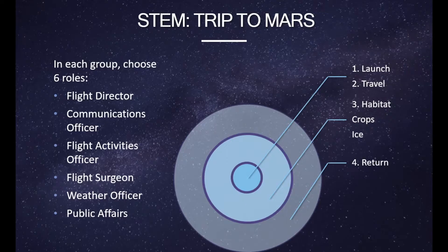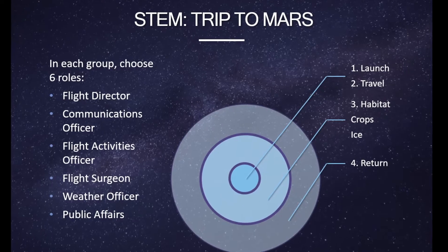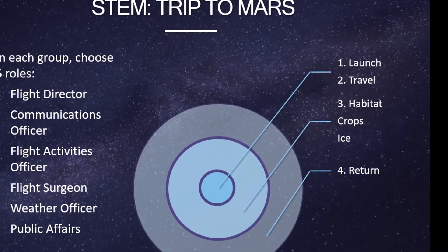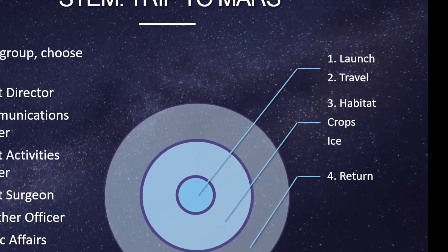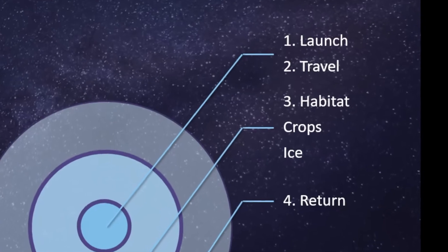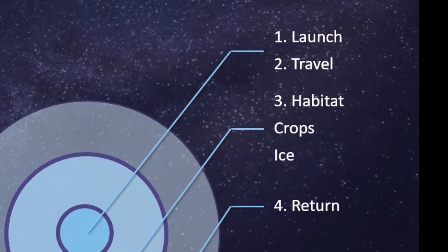So in our trip to Mars, we have four goals. Our first goal is to launch. Our next goal is to travel around Mars. Our third goal is to see if we can find some kind of habitat — are there crops, is there ice? And lastly, our goal is to return home.